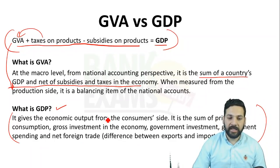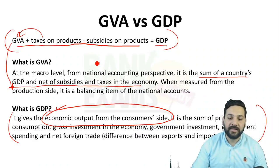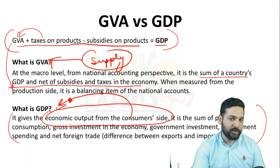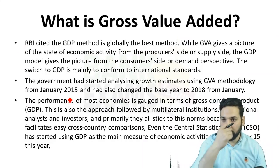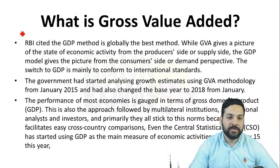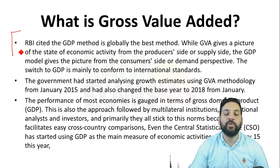GDP is the economic output from the consumer side, while GVA is the economic output from the supply side or the producer side. That is the major difference between GVA and GDP. From the RBI notification, it is confirmed that GVA operates from the producer/supply side, while GDP operates from the consumer/demand side.